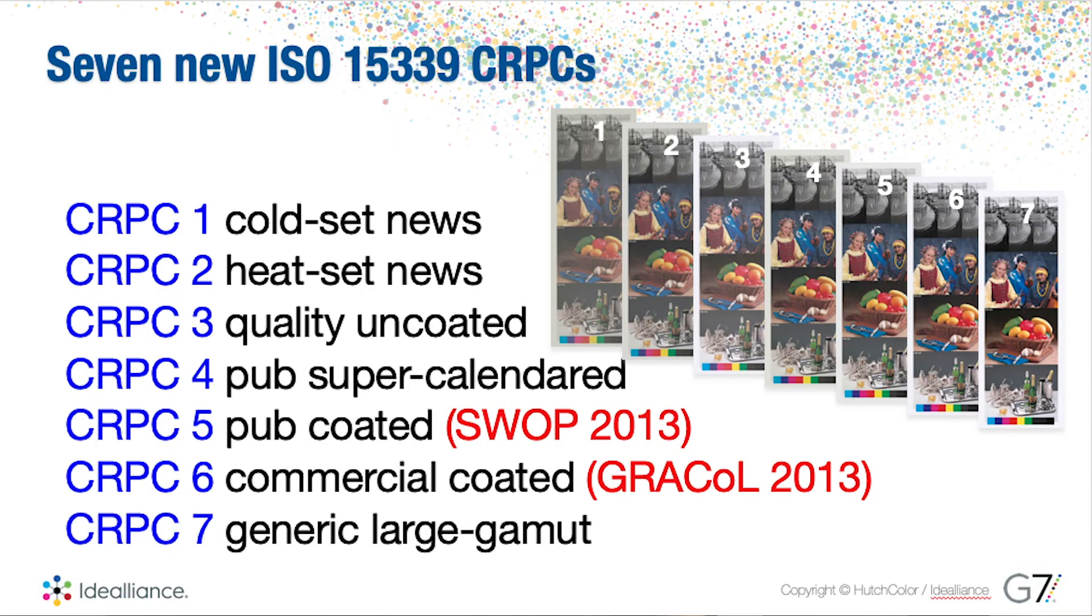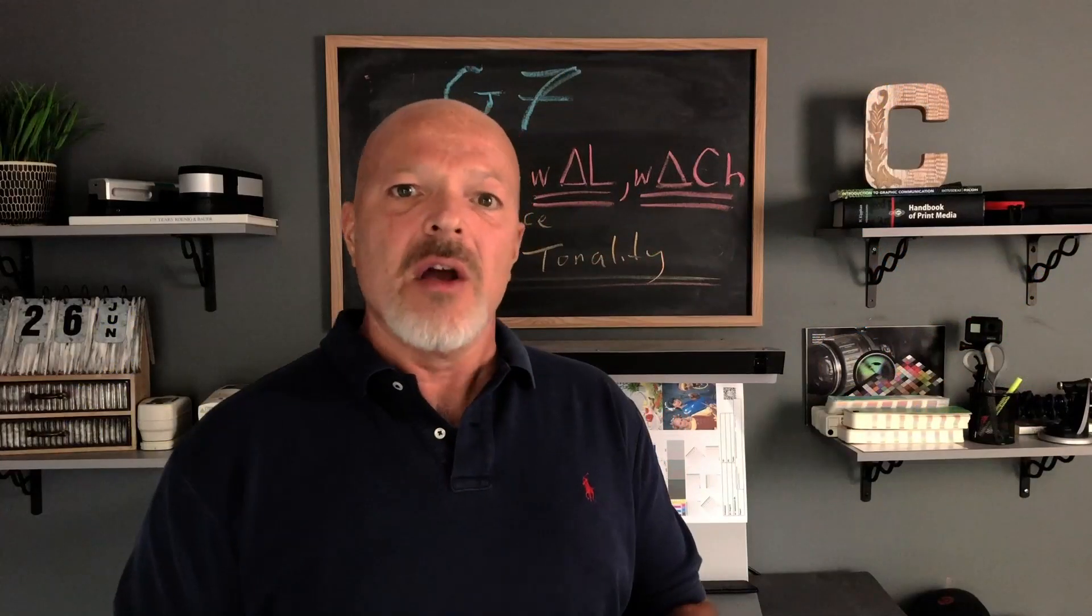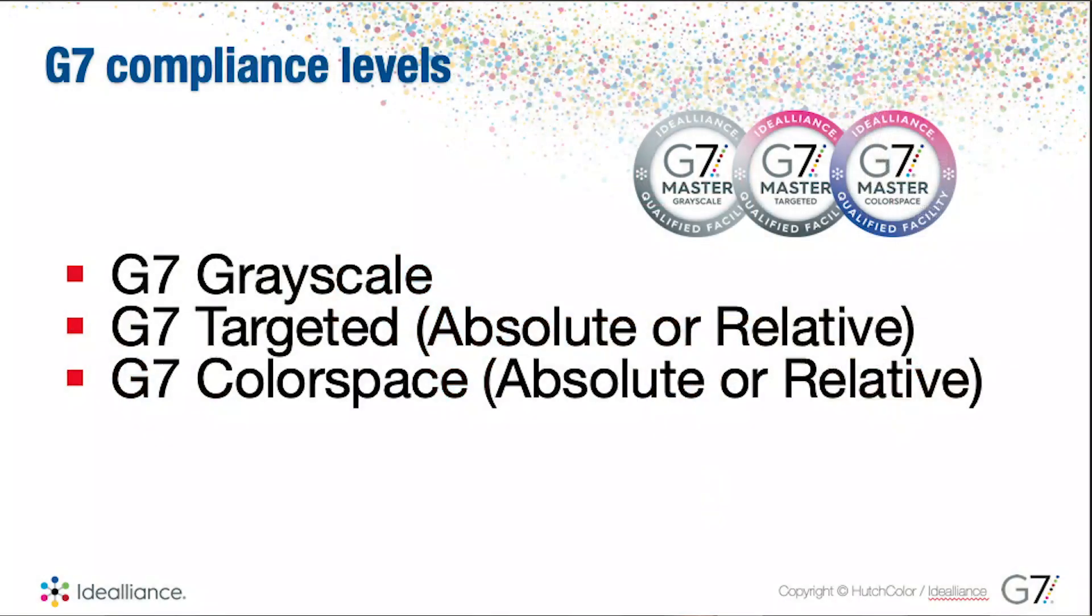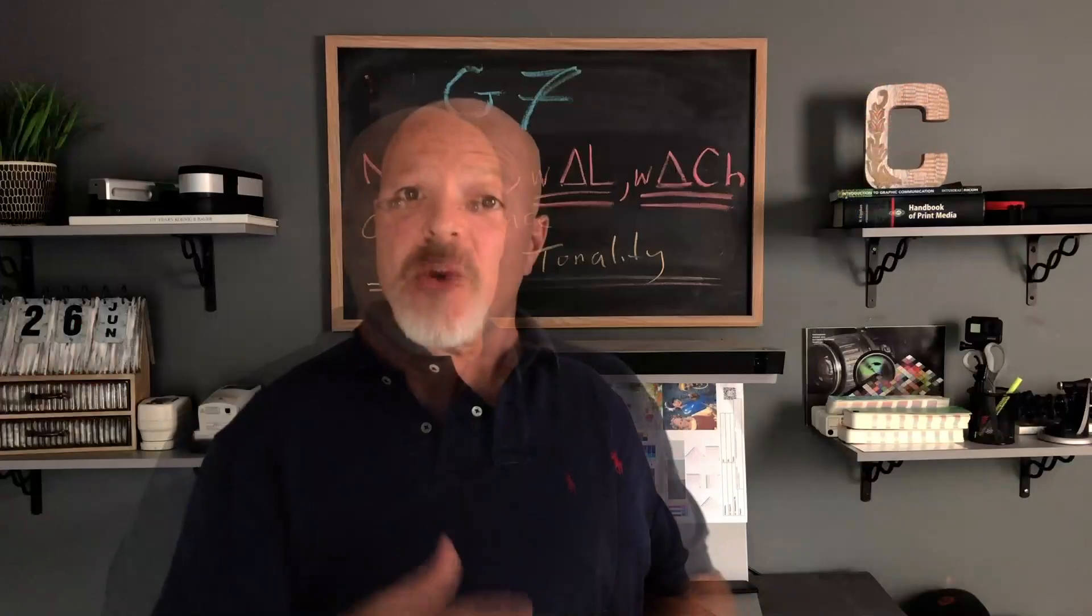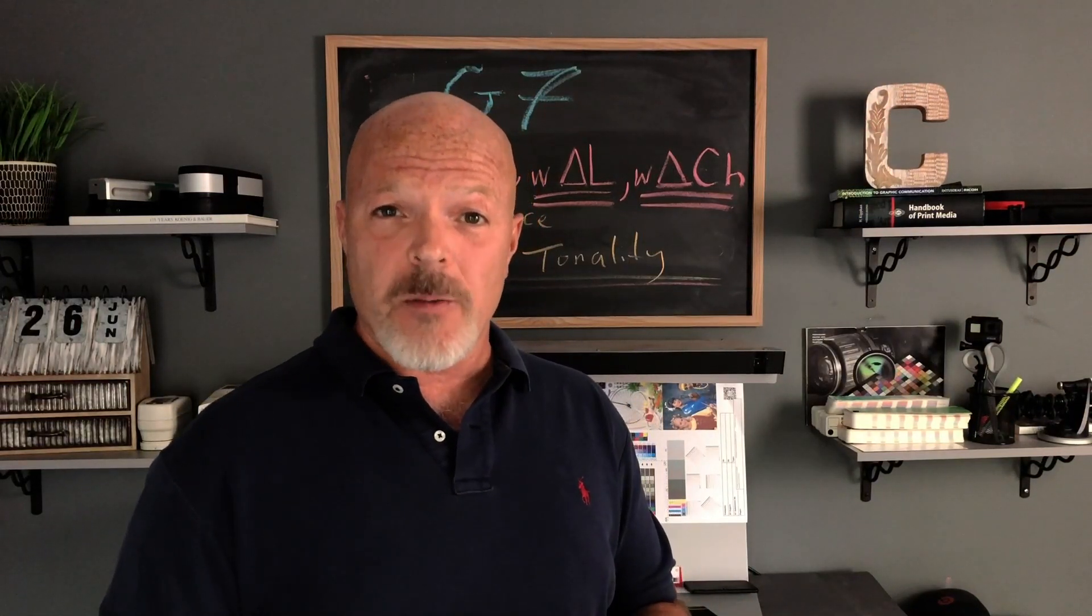It opens them up to doing work for brands or print buyers that require G7 based standards like ISO 12647-7 or those tolerance levels that we have in G7, which are G7 Colorspace, G7 Grayscale, and G7 Targeted. So with that said, let's get started and I'll explain some of these basic G7 terms.